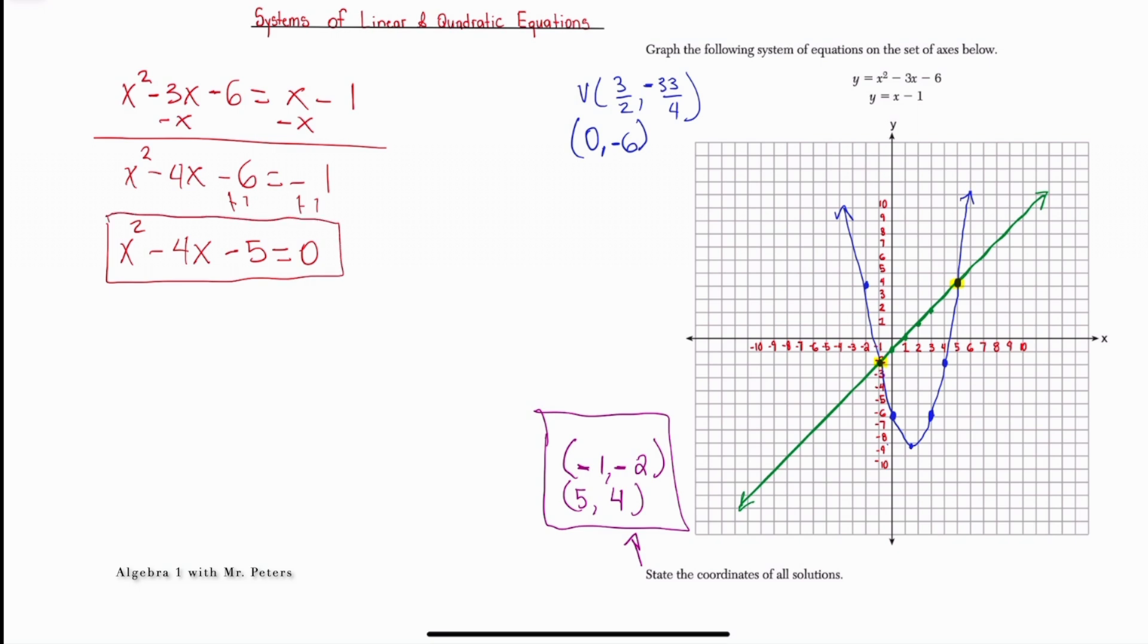So once we combine the two equations family, what we want to do now is factor to figure out what are the solutions, basically the x's. So once we factor this, this is going to turn into x minus 5 times x plus 1 is equal to 0. And when we set both factors equal to 0, we're going to get x is equal to positive 5, and then we're going to get x is equal to negative 1.